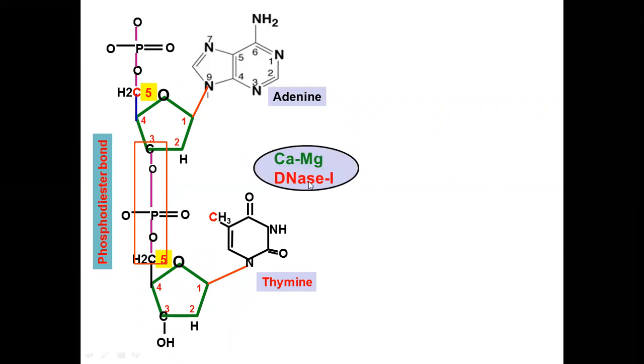DNAase I breaks down the phosphodiester bond between the nucleotides of DNA molecules. DNAase I requires calcium and magnesium as cofactors for its structure and function. It breaks down the phosphodiester bond which connects the two nucleotides of DNA molecules.